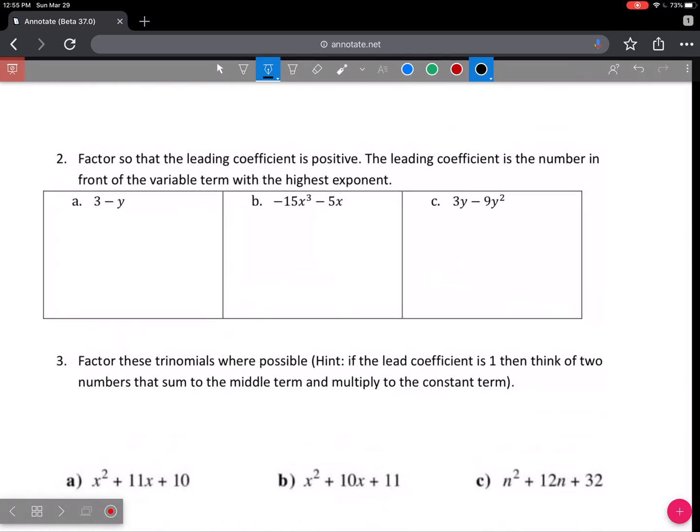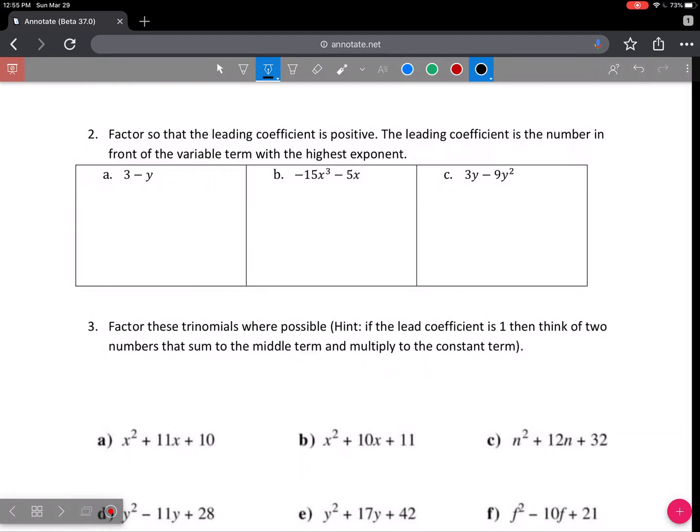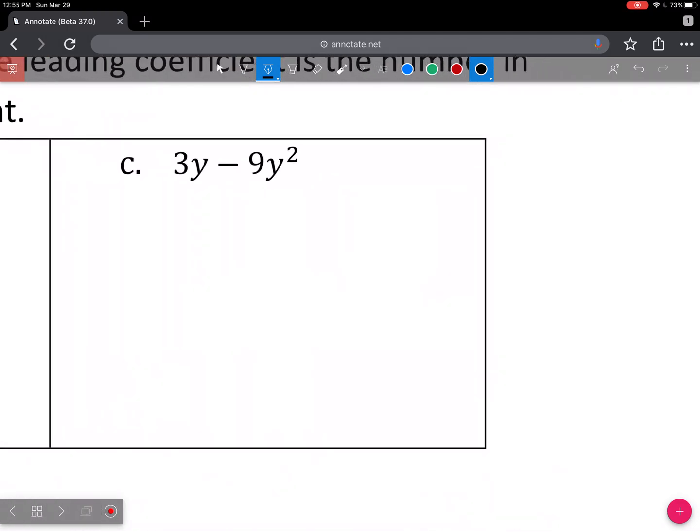So this idea is continued on here on number 2, which I coined the negative trick. It's just a convention that we're all going to have to follow so that things work out nicely. So I'll do letter C for you. It seems like it's the more difficult one.